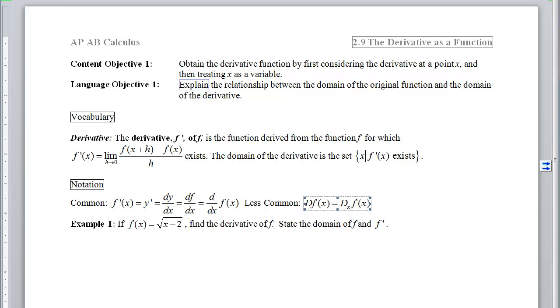Our first example is: if f(x) equals the square root of x minus 2, we want to find the derivative of f, and then we want to state the domain of both the original and the derivative. So we're going to start just doing this algebraically.